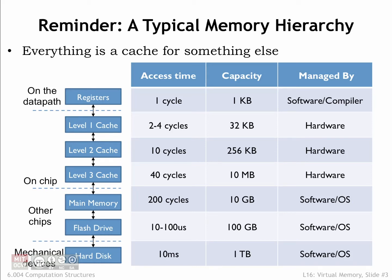In this lecture, we return to the memory system that we last discussed in Lecture 14 of Part 2. There we learned about the fundamental trade-off in current memory technologies. As the memory's capacity increases, so does its access time. It takes some architectural cleverness to build a memory system that has a large capacity and a small average access time.